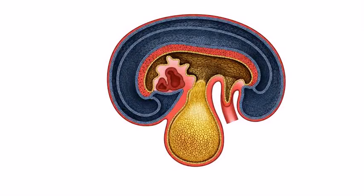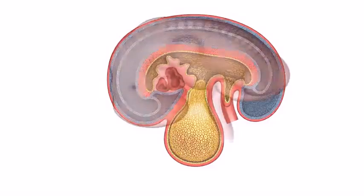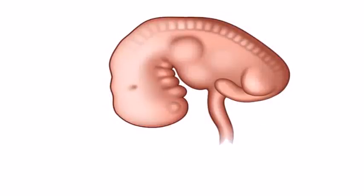As a result of embryonic folding, the major body plan is established and the three germ layers continue to differentiate, giving rise to their own specific tissues and organ systems.